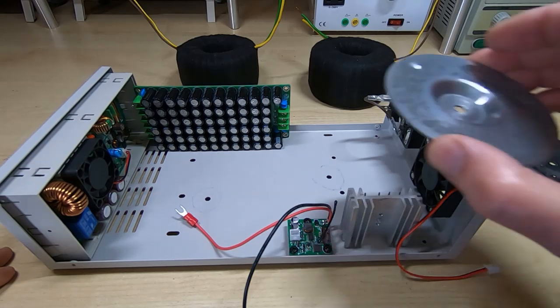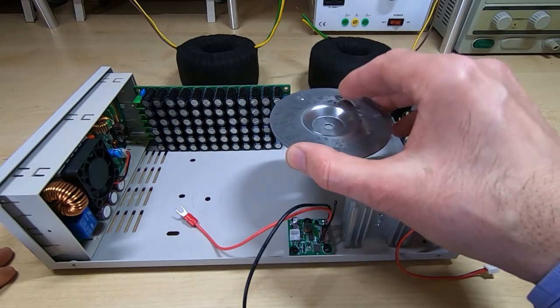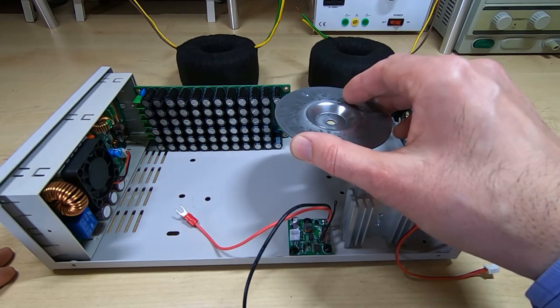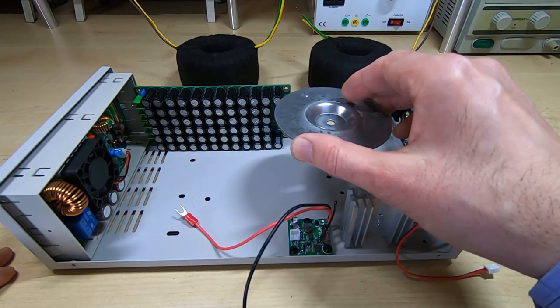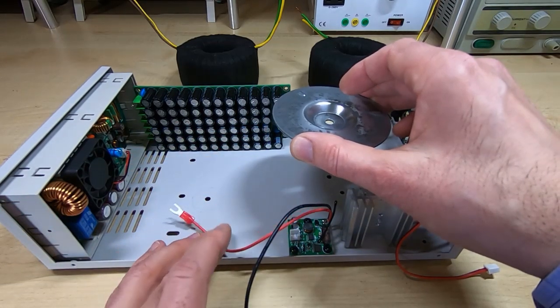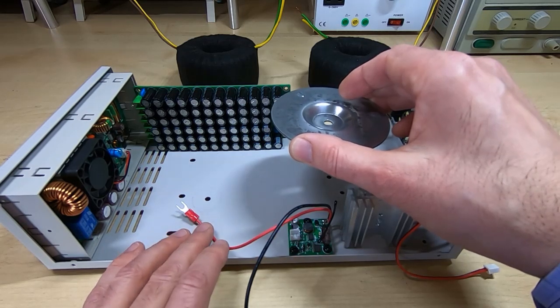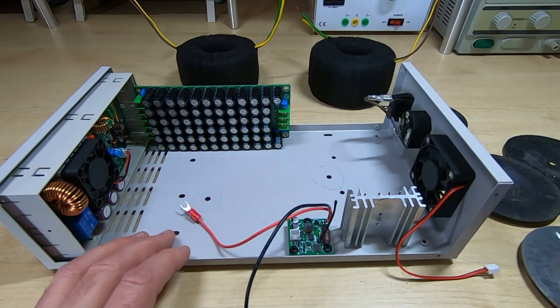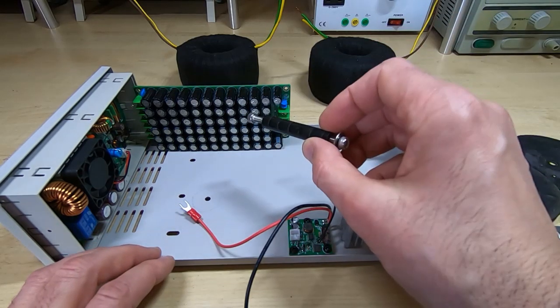The only thing to bear in mind if you do that is that this top plate will be part of a turn going through the transformer core. So if this is then shorted to anything that's attached to the chassis, you'll get a shorted turn and very high currents flowing through it.